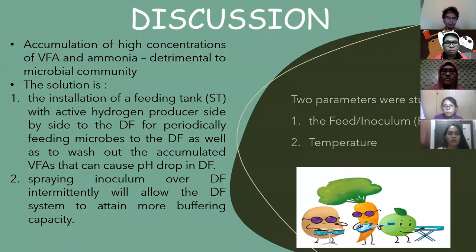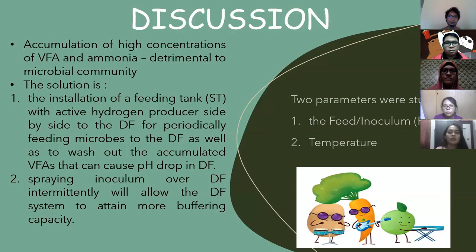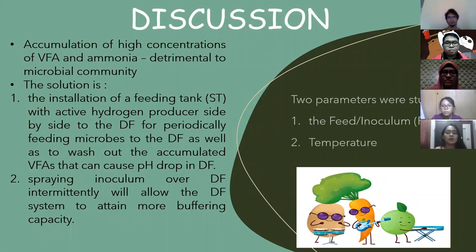For discussion, accumulation of higher concentrations of VFA and ammonia can be detrimental to the microbial community. To solve this problem, a feeding tank needs to be installed to wash out accumulated VFA that can cause pH drop in dark fermentation. Another approach is spraying the inoculum over the dark fermenter to attain more buffering capacity.